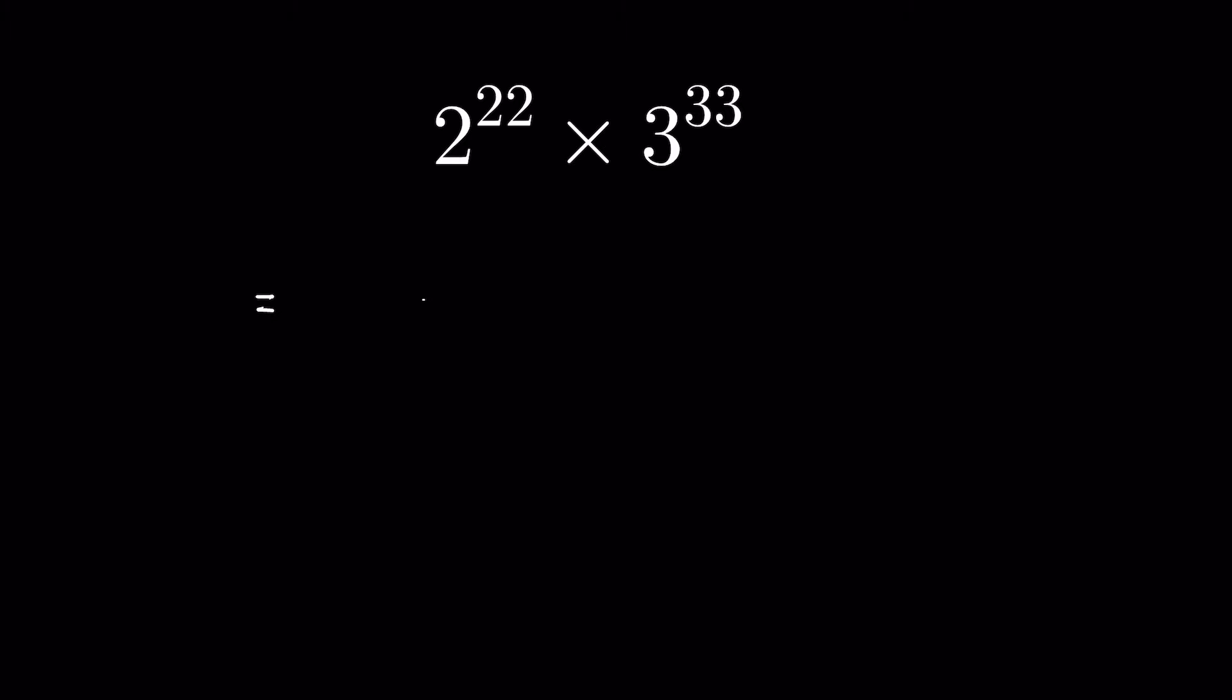Now 2 to the power 22 we can write it as 2 to the power 2 times 11, then times 3 to the power 33 as 3 to the power 3 times 11.